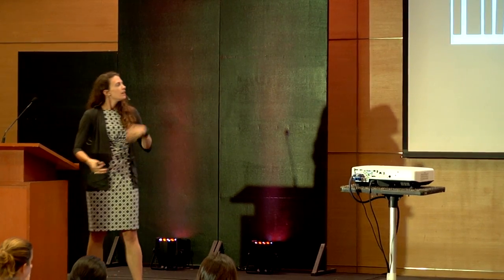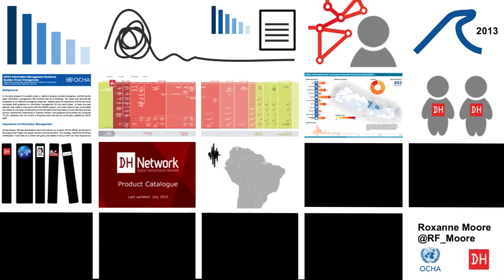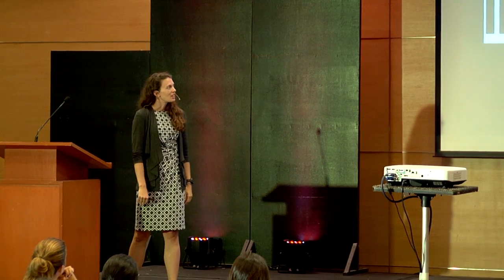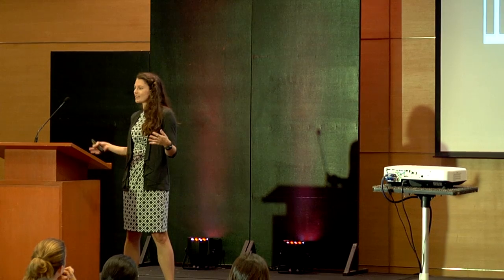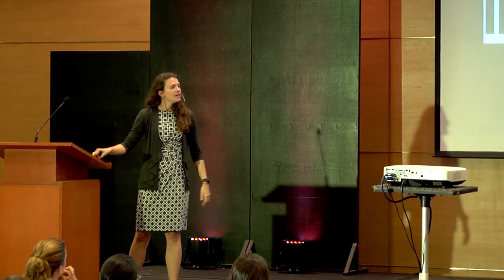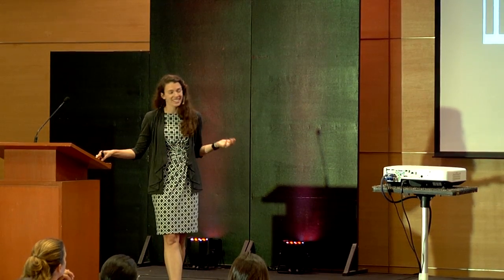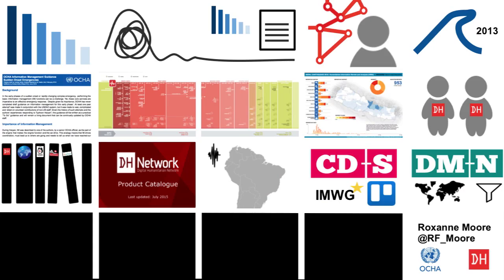In April 2016, the Ecuador earthquake saw a number of new tools and products released. Helen Campbell's coordinated data scramble specifically released a series of questions approved by the Information Management Working Group — searching for answers together rather than independently. They were able to analyze results: how many map products came out and how many actually answered what they were interested in. That project is called Map Filter.